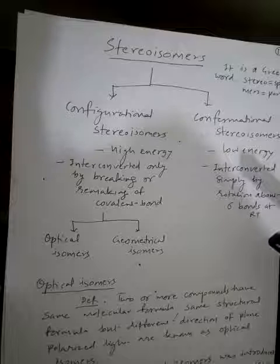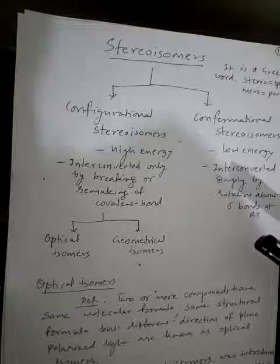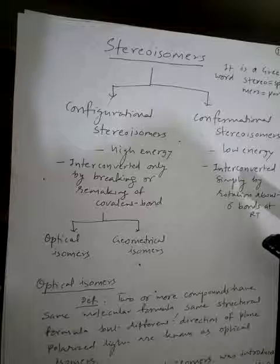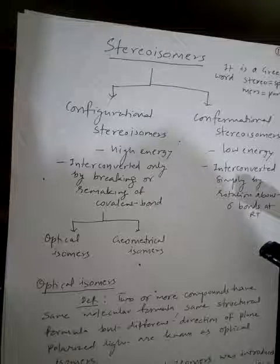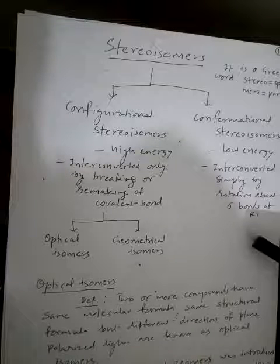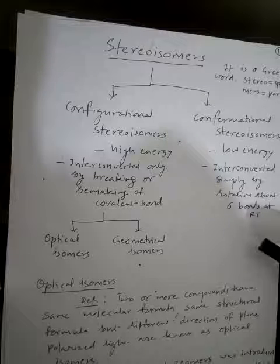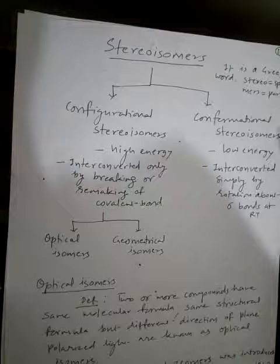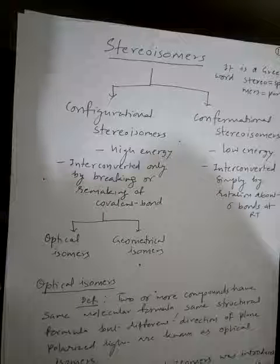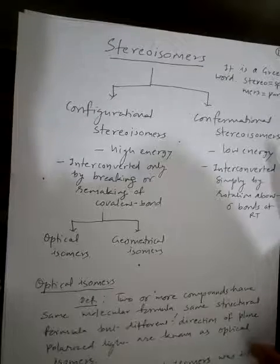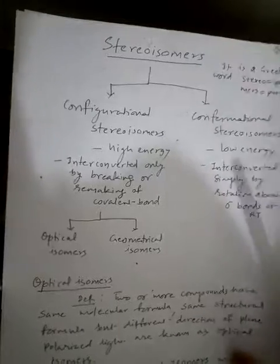Optical isomers — definition: two or more compounds that have the same molecular formula and same structural formula, but a different direction of rotation of plane polarized light, are known as optical isomers. The concept of optical isomers was introduced by the French chemist Louis Pasteur in 1848.